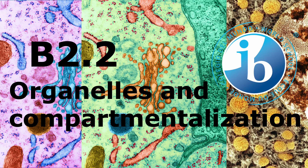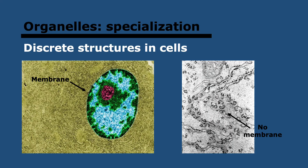Hello, everyone. So today we're looking at B2.2, which is organelles and compartmentalization in IB biology. This is going to be a really short topic, you'll be glad to hear. Let's start off with organelles — what are they? They're discrete structures in cells that are adapted to perform one or more vital functions. This increases efficiency when you have specialization.